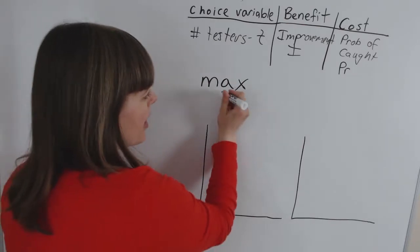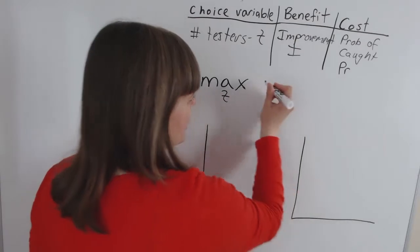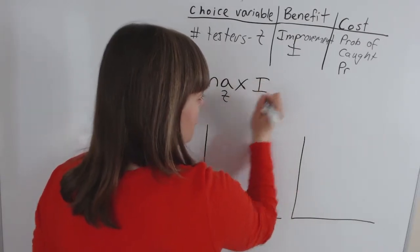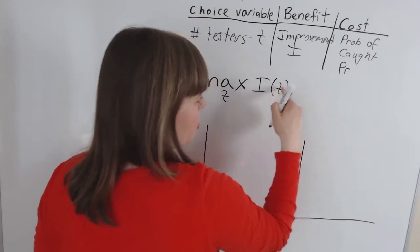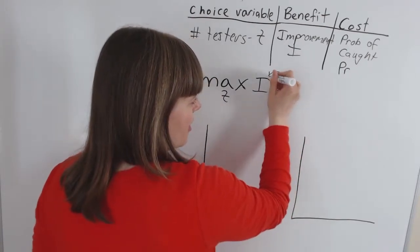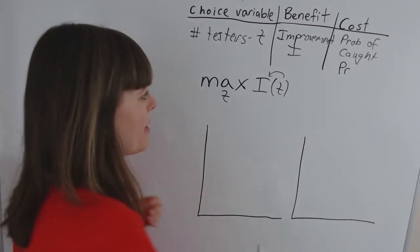We put our choice variable under the maximization sign. Number of people we're testing on. And it's benefit minus cost. So our benefit is improvement in the product which is a function of our choice variable. Meaning the more people we test our product on the more improved our product is going to be based on the updates.